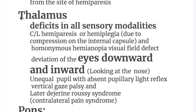The next site is the thalamus. Bleeding in the thalamus causes deficits in all sensory modalities, plus contralateral hemiparesis or hemiplegia of the upper motor neuron type, due to compression of the internal capsule — which can be compressed in bleeding from both putamen and thalamus. Homonymous hemianopia also occurs in thalamic hemorrhage because of the lateral geniculate body, through which optic nerve fibers pass to the occipital cortex, causing visual field defects.